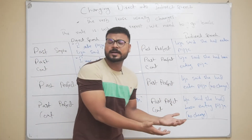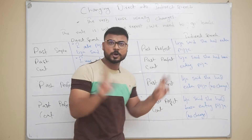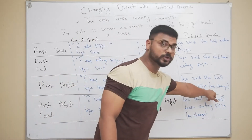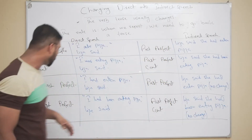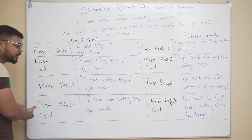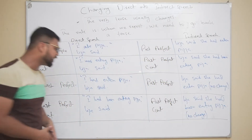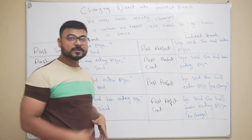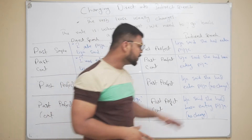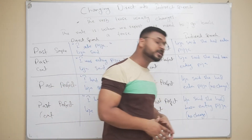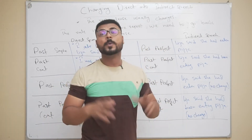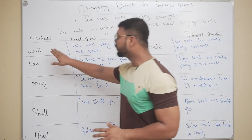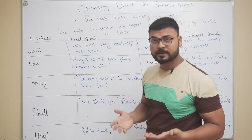For past perfect: 'I had eaten pizza,' Lisa said. In indirect speech it remains the same: Lisa said she had eaten pizza — no change. And for past perfect continuous: 'I had been eating pizza,' Lisa said. In indirect speech: Lisa said she had been eating pizza — again, no change, and no quotation marks.